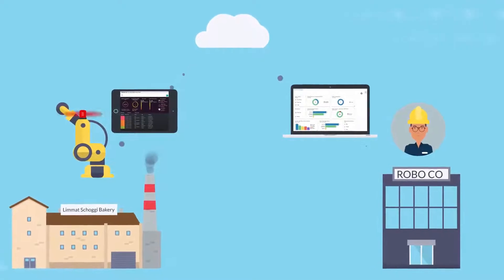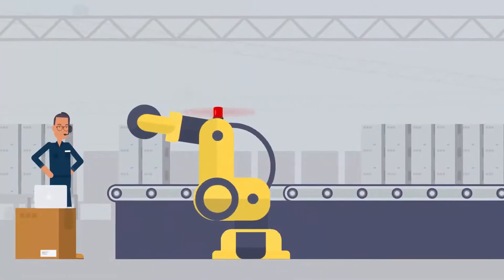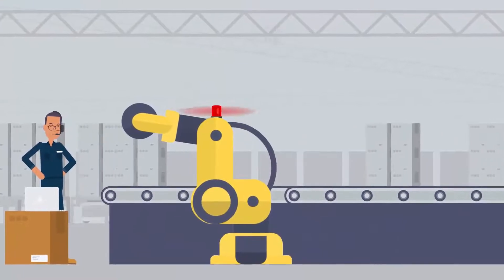Peter, the engineer, is assigned to investigate the problem. Peter arrives at the bakery and is quickly escorted to the overheated robot.